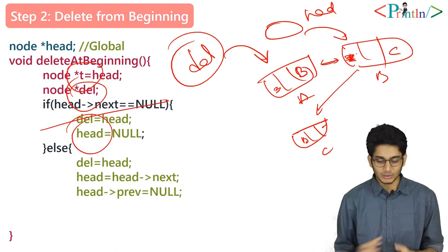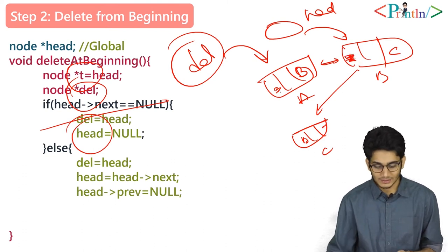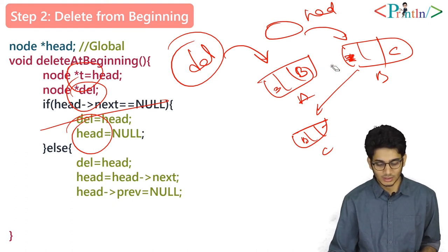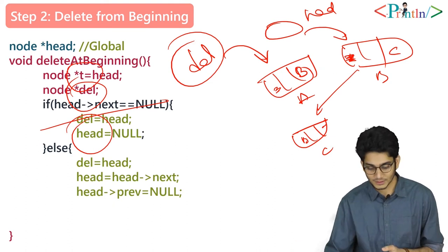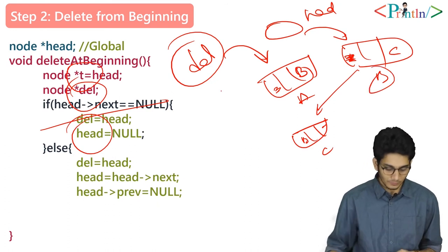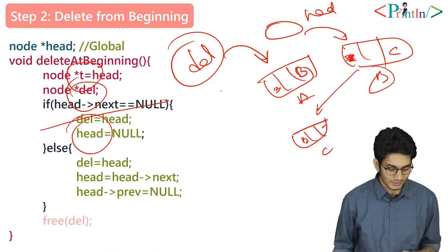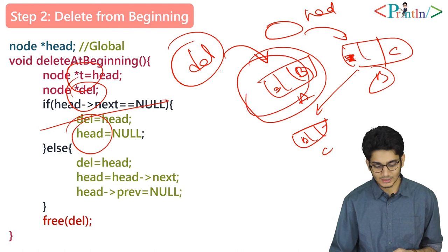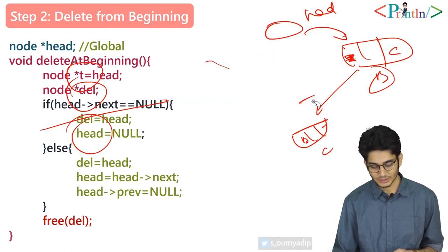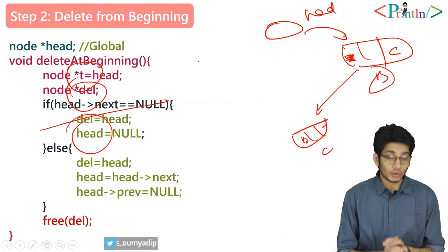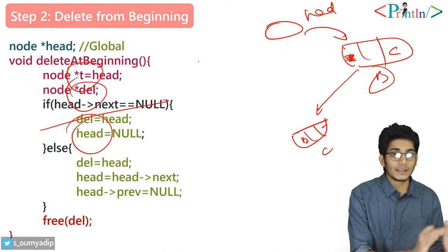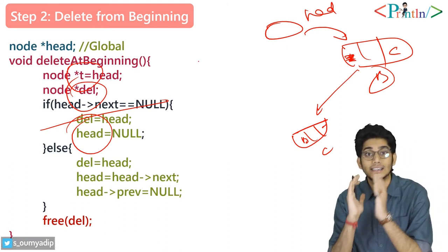Then we set head prev as null, discarding the connection to the old first node. Now b is our first node since head points to b. Finally, we deallocate the memory of del. This is how we delete any element from the beginning of a doubly linked list.